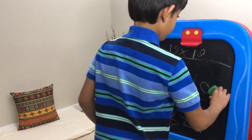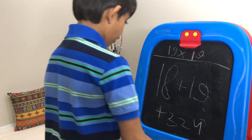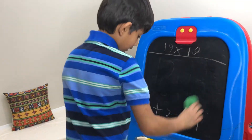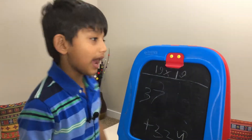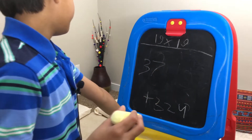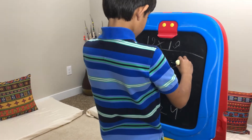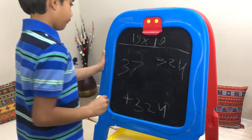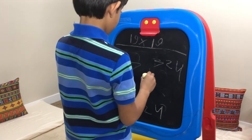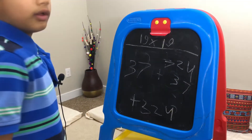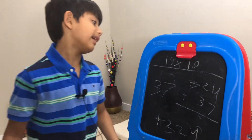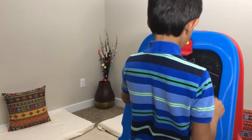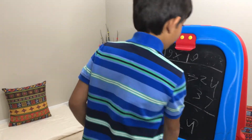Now we know that 18 plus 19 is 37. All we have to do now is add 37 with 324. We set up hundreds, tens, and ones places. For the ones: 7 plus 4 — if you don't know, try adding 7 plus 3 which is 10, and 10 plus 1 is 11. So 4 plus 7 is 11.